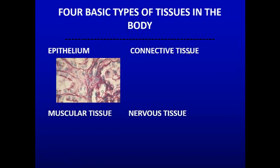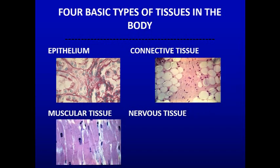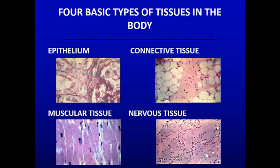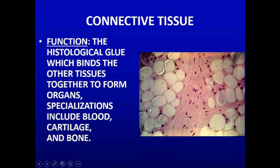There are four basic types of tissue. Epithelium covers things, connective tissue connects things, muscle tissue contracts and moves things, and nervous tissue is for communication. Epithelium covers organs, lines visceras, blood vessels, and forms the secretory cells of glands. It lines your circulatory system, the outside of your body cavities, and your digestive tract.